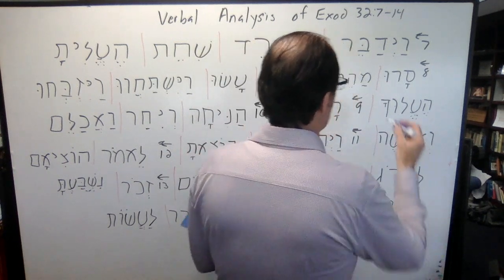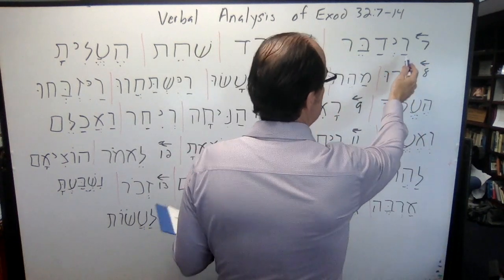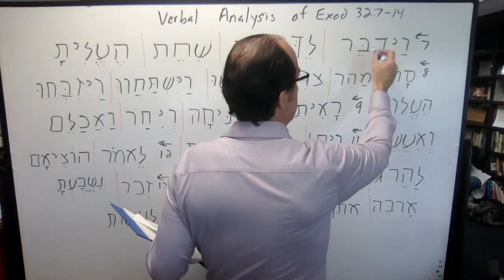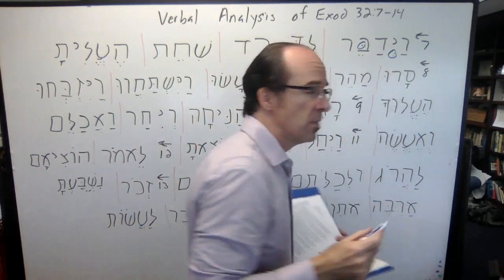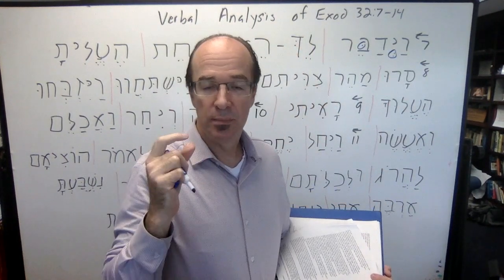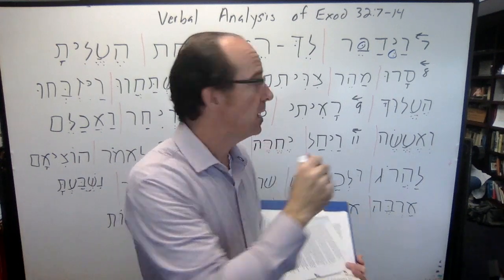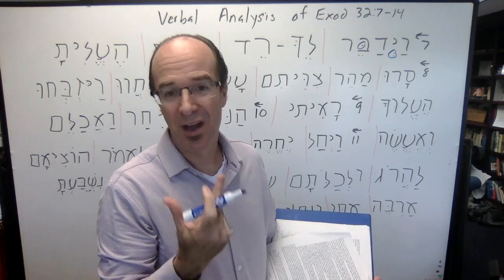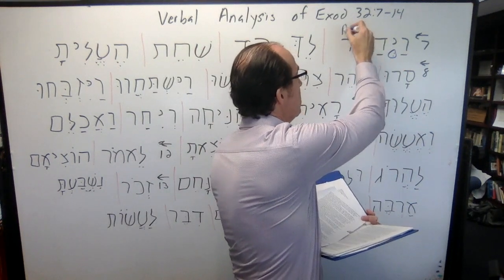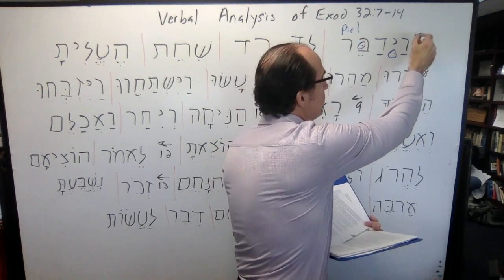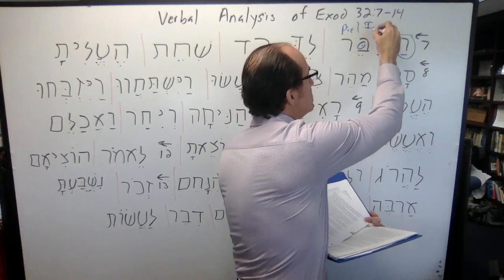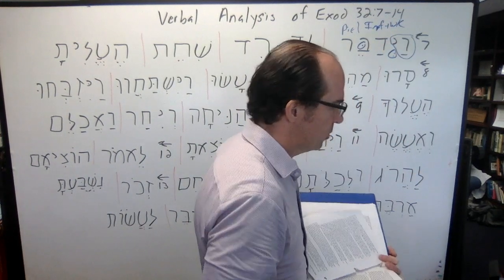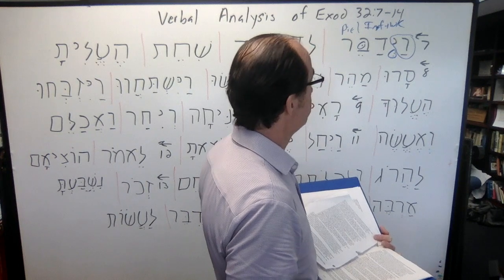Our initial verb is vayadavar, and this is a Piel. Notice the sign of the Piel is going to be the shava under the performative and a doubled second radical. The root or evidence of this is a strong verb, so we can see that. So this is Piel, and clearly imperfect plus vav-consecutive, and it comes from dabar.